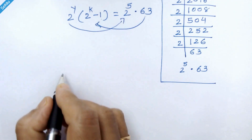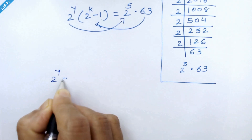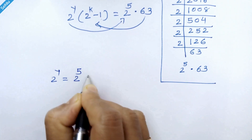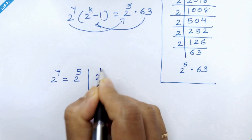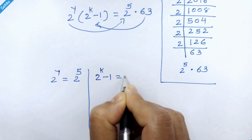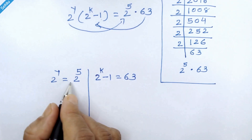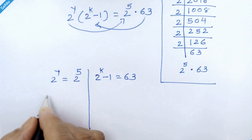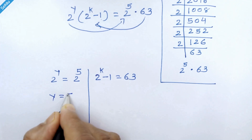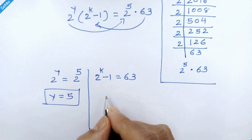2 raised to k minus 1 and 2 raised to y can be associated with 2 raised to 5. So we can put 2 raised to y is equal to 2 raised to 5, and 2 raised to k minus 1 is equal to 63. Here we have the same base on both sides, so we can equate their exponents, giving us y is equal to 5.